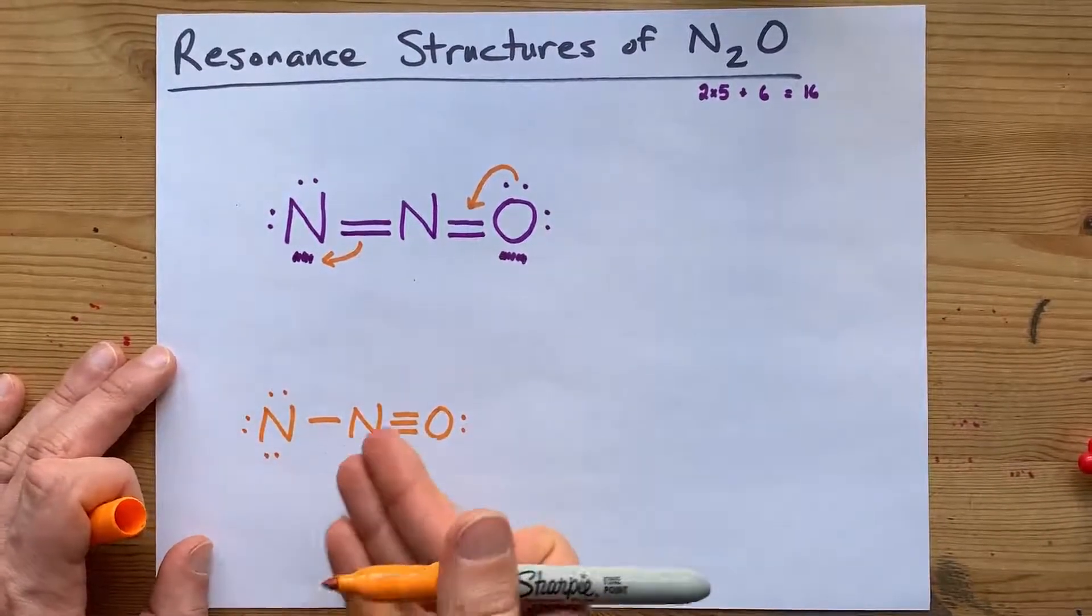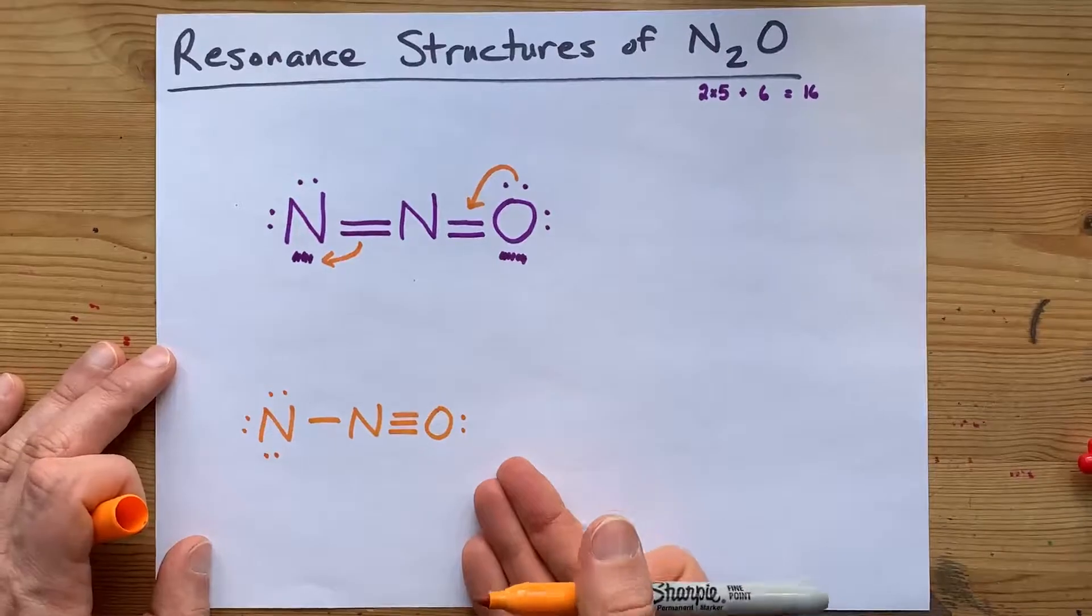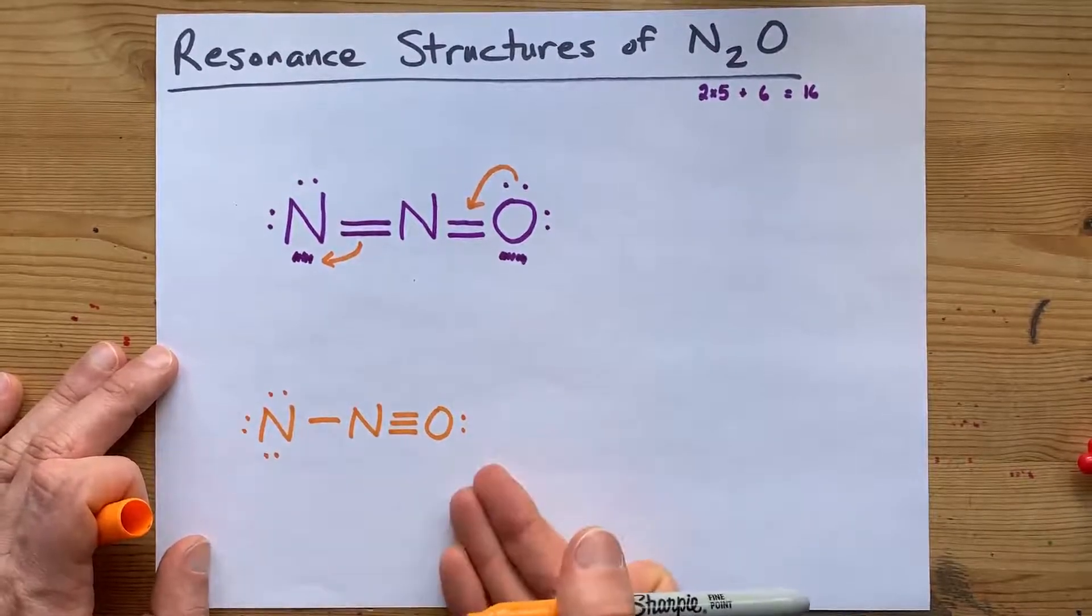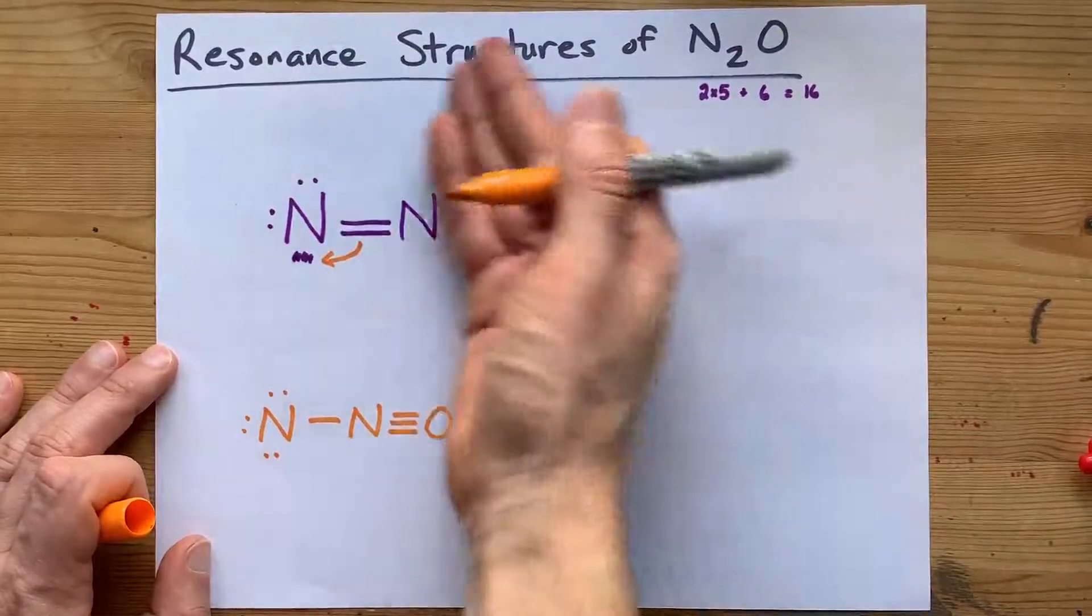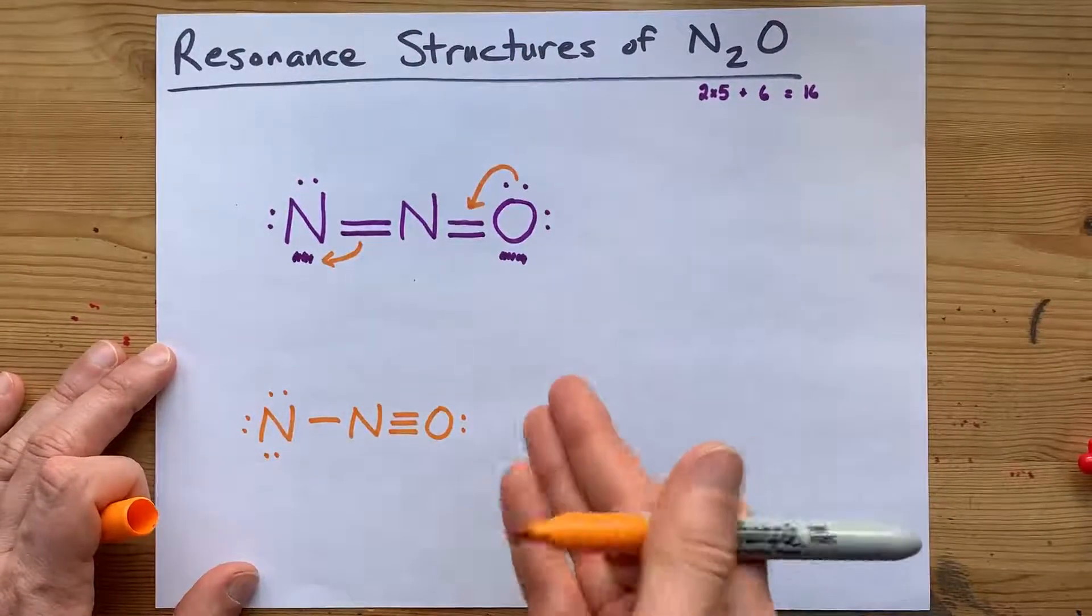Now, this isn't the most stable Lewis structure you can draw, but it is valid, because I have a complete octet on all of the atoms. So it is technically a contributing resonance structure.